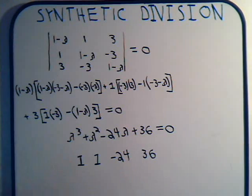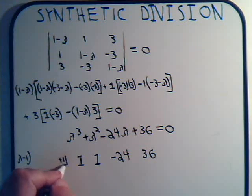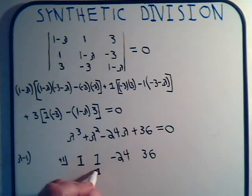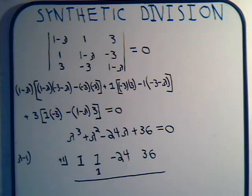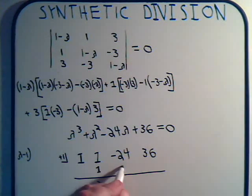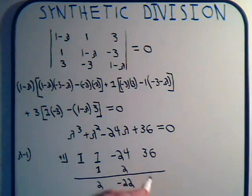Let's see, would lambda minus 1 be a factor? We write down here the opposite of that, plus 1. We write that down here. Then we add and multiply. This is 2 times 1 is 2. This is minus 22 times plus 1 minus 22. That does not add up to zero, so we discard that.